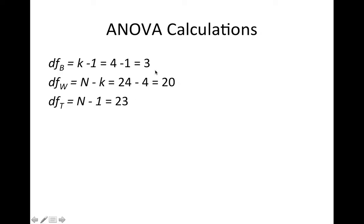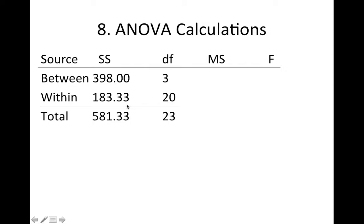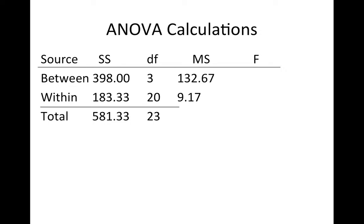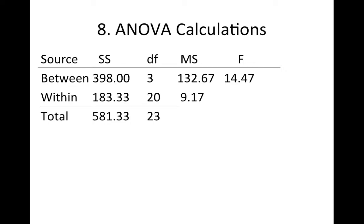My degrees of freedom terms are the degrees of freedom is just the number of groups minus one. Degrees of freedom is the total number of observations minus the number of groups, and the degrees of freedom total is the total number of observations minus one. Those should add up too. Three plus twenty, does it equal twenty-three? Yes, it does. I put my data in my ANOVA table, and then I calculate my mean squares and my F's.